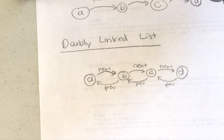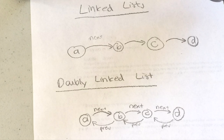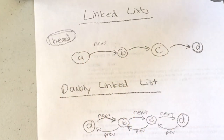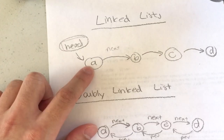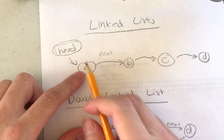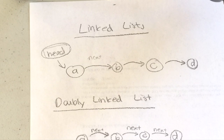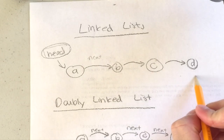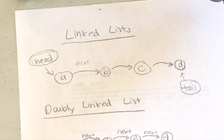So how do you create a linked list and add values to it? In most implementations, there's something called a head pointer. The head pointer indicates the first element of the linked list — it points to the first element, which is A. Some implementations also have a tail pointer, which points to the end of the linked list.